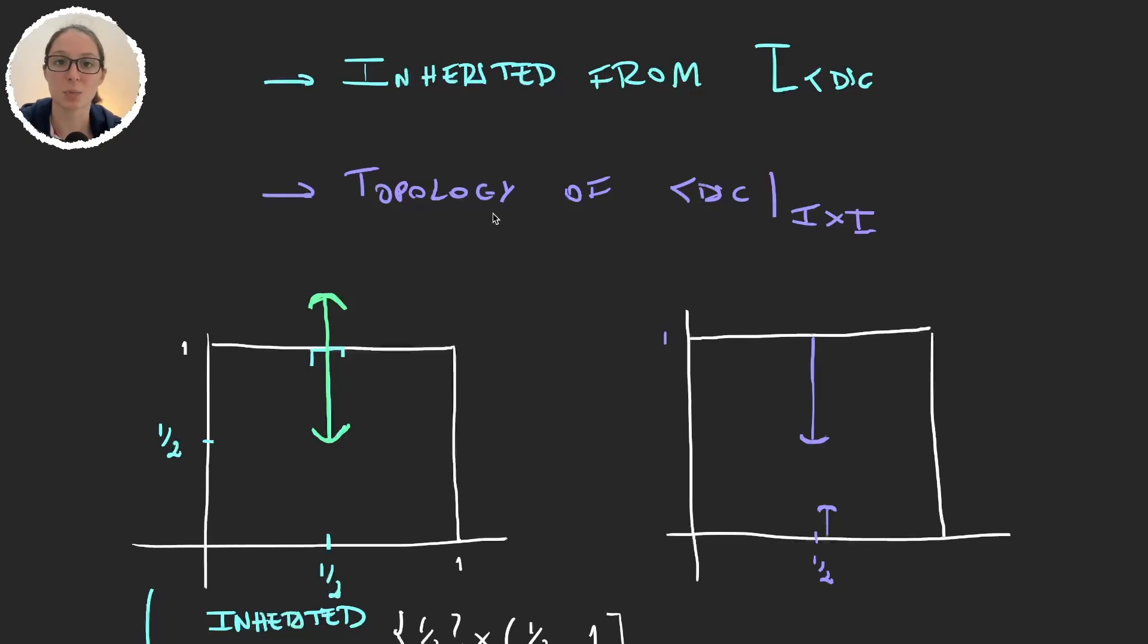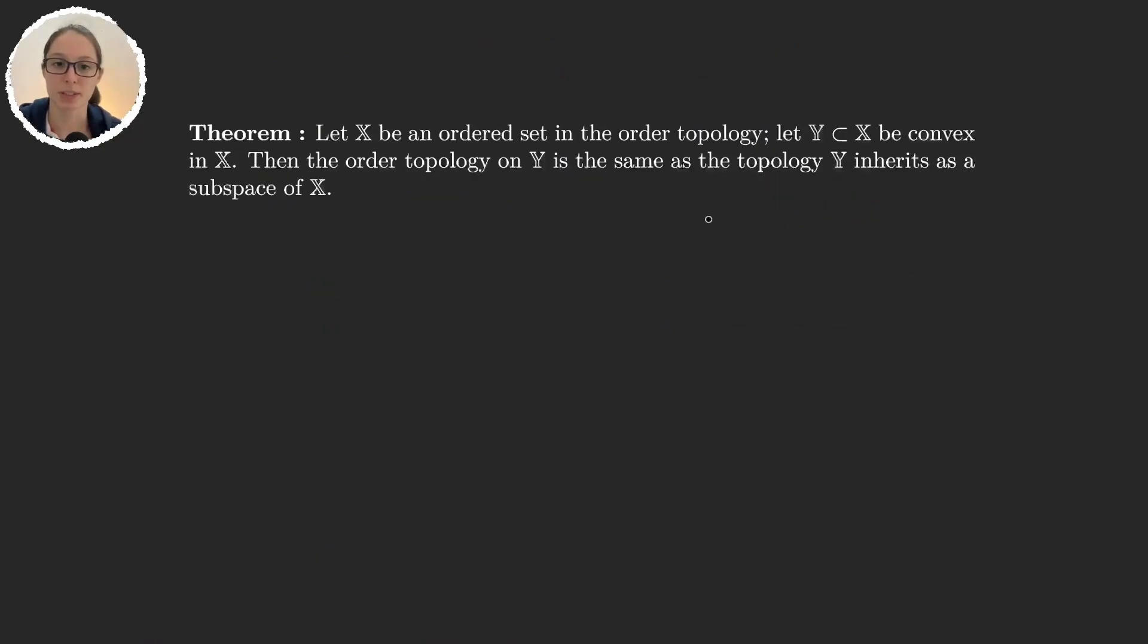Well, let's see this with a theorem. The theorem says that we have X and order Z in the order topology. So, again, we have X, and the topology given by some simple order. We have a subspace of X that's convex. Then the order topology on Y is the same as the topology Y inherits as a subspace of X.